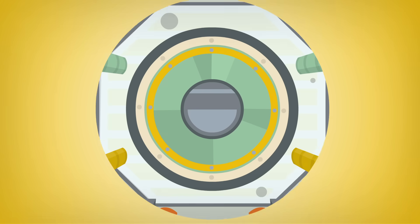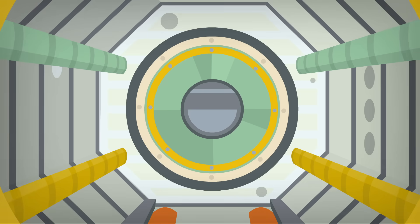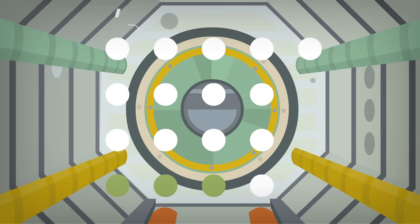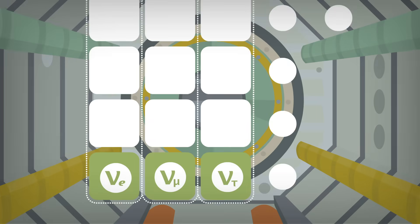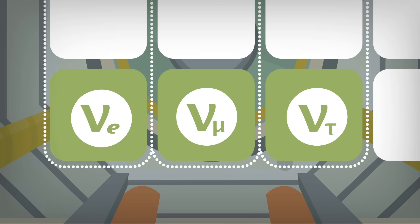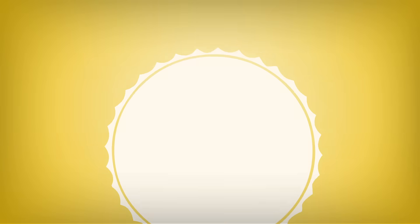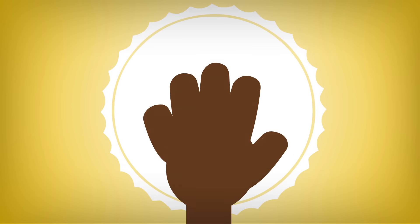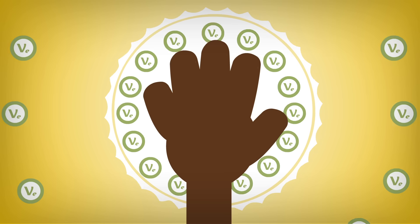To observe the W and Z directly, we needed the high-energy collisions provided by particle accelerators. There's another kind of standard model particle called neutrinos. These only interact with other particles through the weak force. Trillions of neutrinos, many generated by the Sun, fly through us every second.